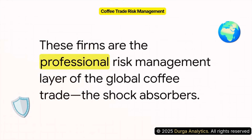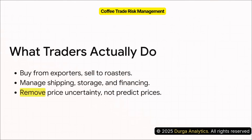And that brings us to the international trading houses. These are the big firms, often based in hubs like the US, Switzerland, or the UK. They are the professional risk management layer of the global coffee trade — you can think of them as the shock absorbers of the entire system. They act as the logistical and financial bridge between thousands of exporters and thousands of roasters, handling shipping, storage, and financing.